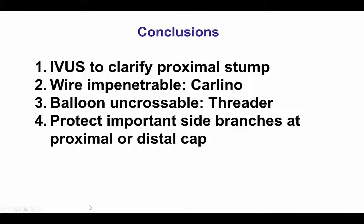Several lessons are from this case. First, use of IVUS can help clarify proximal cap ambiguity. Second, when wires cannot penetrate — wire-impenetrable lesions — use of the Carlino microdissection technique with contrast can help create a channel that facilitates subsequent wire crossing. Third, for balloon-uncrossable lesions, it is important to have an algorithm, and use of the threader catheter can often provide crossing and facilitate microcatheter advancement. And lastly, it is important to protect side branches both at the proximal and distal cap. In this case, we should have rewired the diagonal branch after stenting the main vessel before performing high-pressure post-dilation, which would have minimized the risk of losing that branch.